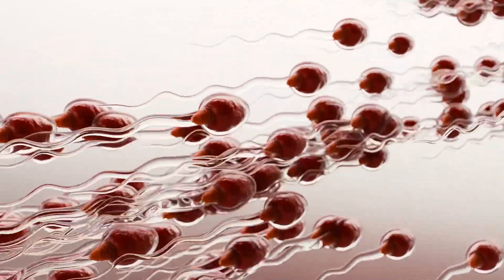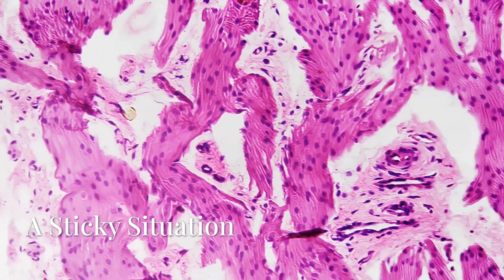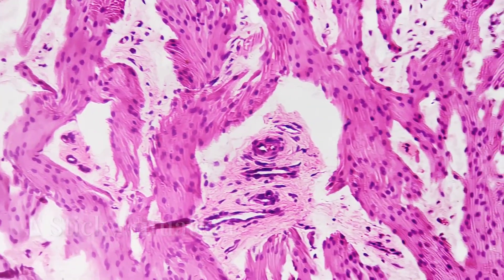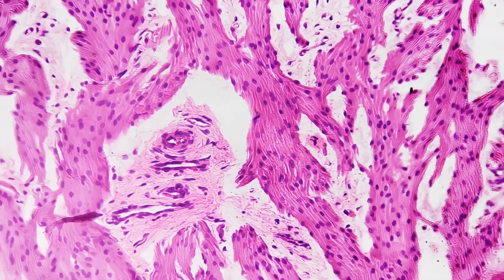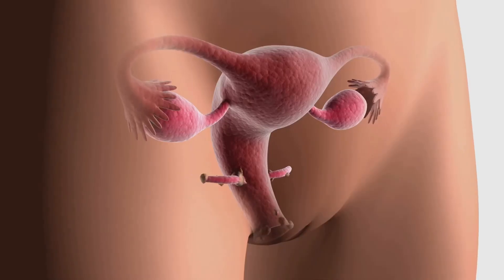The sperm, with their tiny tails whipping furiously, must quickly find their way. They have a long way to go. The cervix is the gateway to the uterus - the next stop on the sperm's journey.